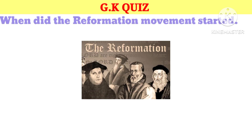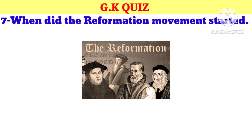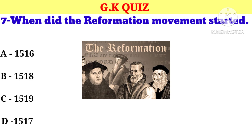Question number 7. Where did the reformation movement start? Your options: A. 1516, B. 1518, C. 1519, D. 1517. And now your correct answer is D. 1517.